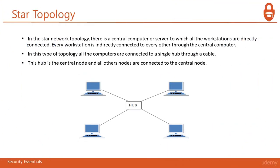The next topology is the Star topology. In the Star network topology, there is a central computer or server to which all workstations are directly connected. Every workstation is indirectly connected to every other through the central computer. All computers are connected to a single hub through a cable — this hub is the central node to which all other nodes are connected. If System 1 needs to communicate with System 500, System 1 only has to transfer to the single hub, and then the hub redirects the information to System 500, without communicating with all devices in between.